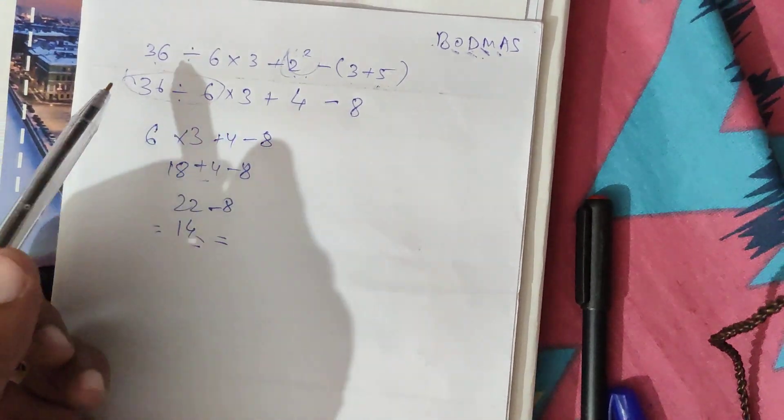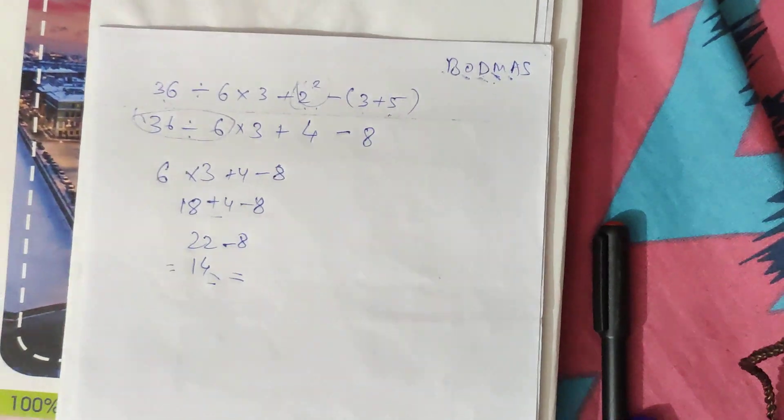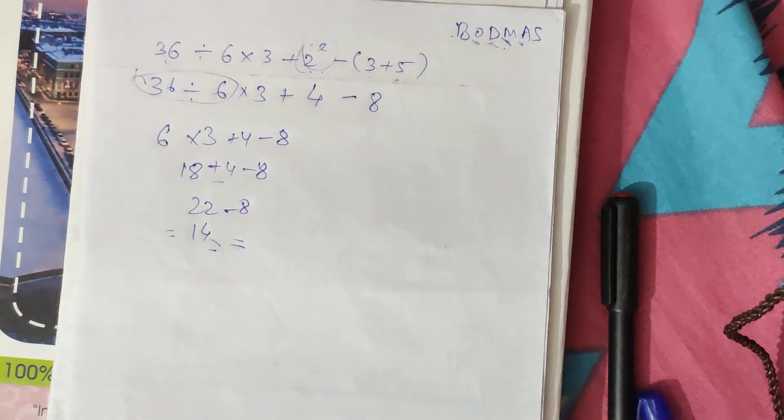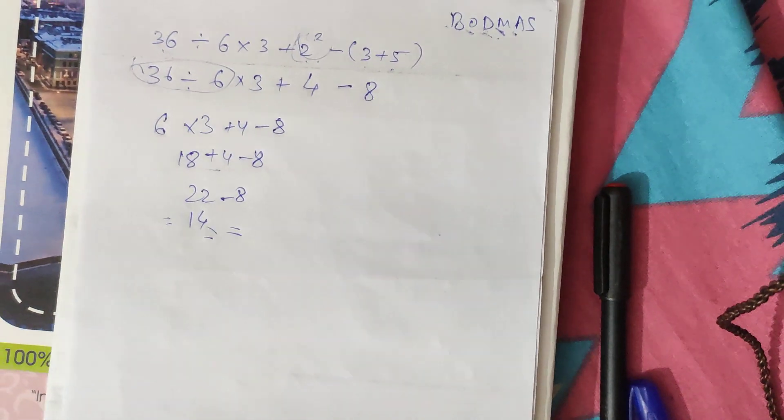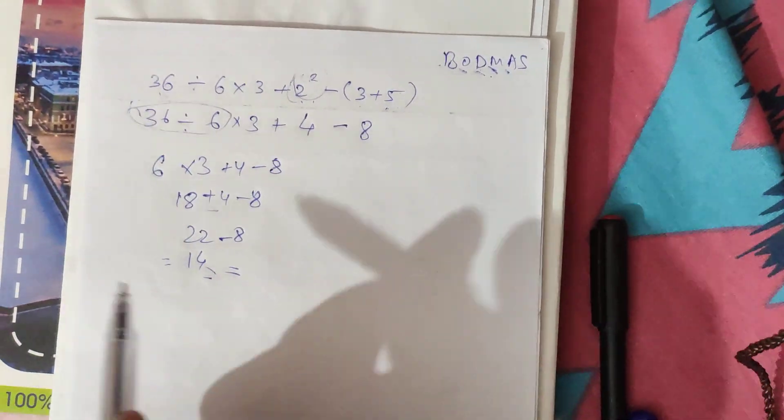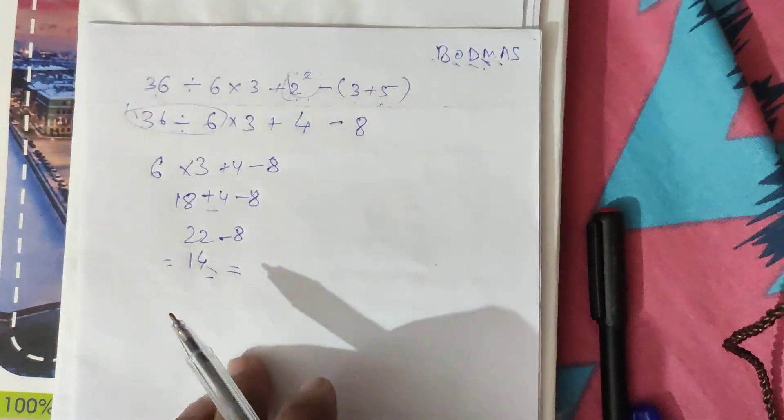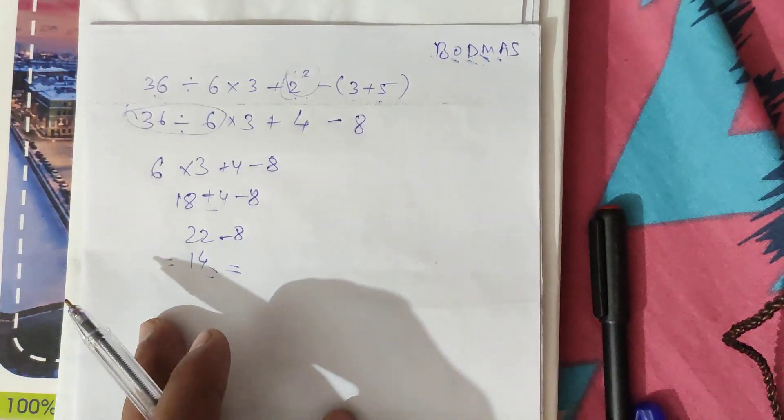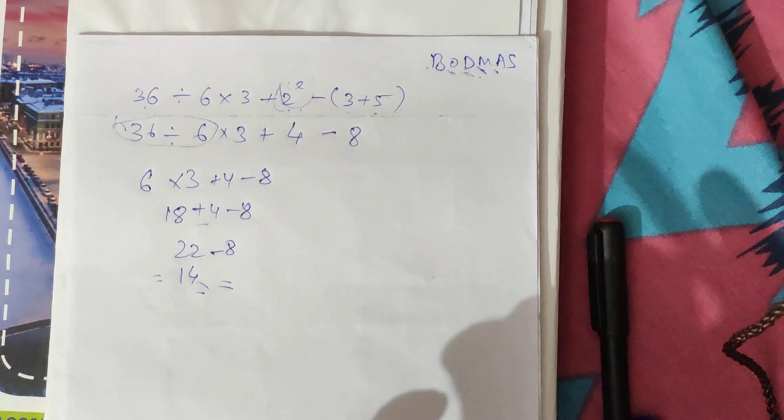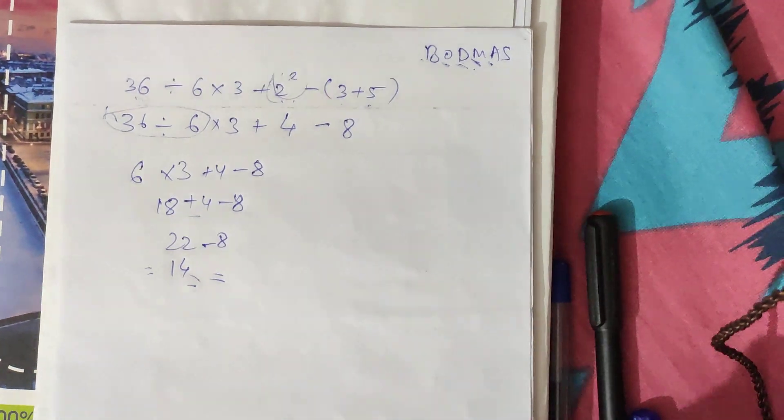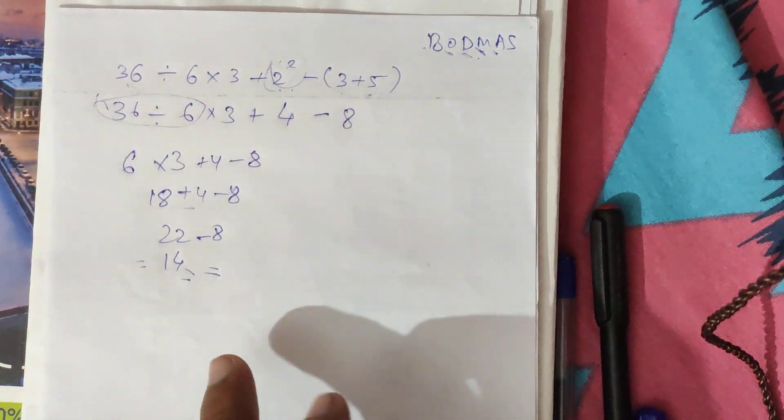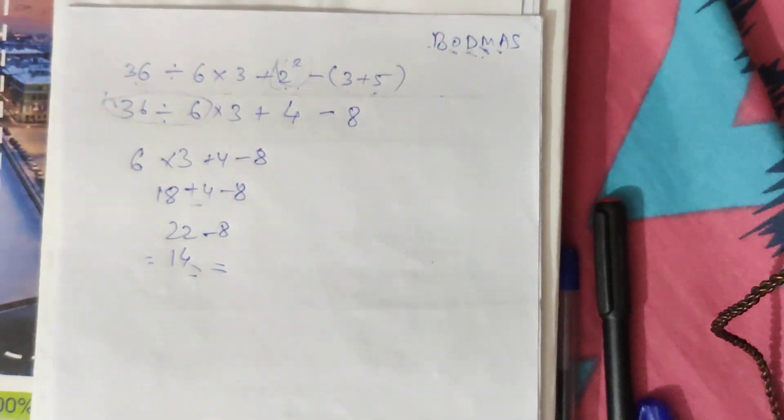So we use the order of operators to avoid confusion. When we are given nothing but just simple addition there is no problem, but when the minus sign comes into play, there the problem arises. So to avoid that we use the order of the operators.